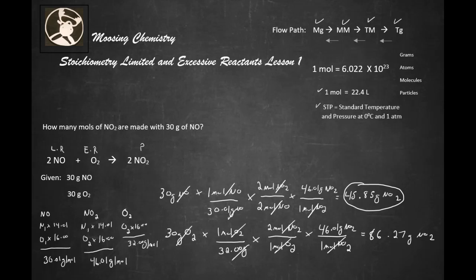All right, now based upon that, let's figure out how many moles of NO2 are made with 30 grams of NO. So we take our limiting reactant, which is going to be our NO, and we're going to convert that into moles of NO first.